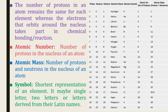Now, how do we represent elements using a short method? The shortest representation of an element is its symbol. It may be a single letter, two letters, or letters derived from their Latin names. For example, the symbol of hydrogen is H and helium is He. The first letter should always be a capital letter and the second letter should always be a small letter.